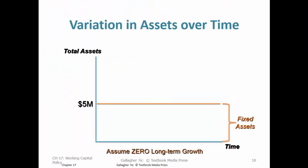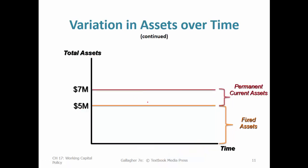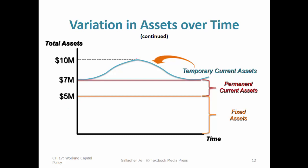Now let's map out how assets change over time. Fixed assets at $5 million don't change much — they chug along on the timeline. Permanent current assets are a chunk of current assets that are always present: some cash in the bank, something in accounts receivable, some prepaid expenses — about $2 million is always on the books. Then there's an additional temporary amount that fluctuates — sometimes close to zero, sometimes adding up to $3 million of additional current assets based on seasonal factors. Businesses with high seasonal sales generate lots of accounts receivable in that season.